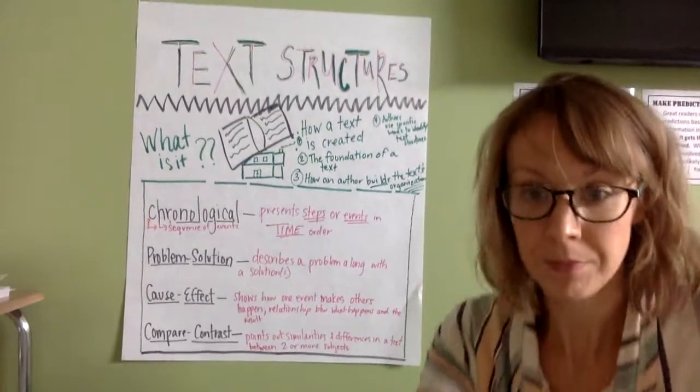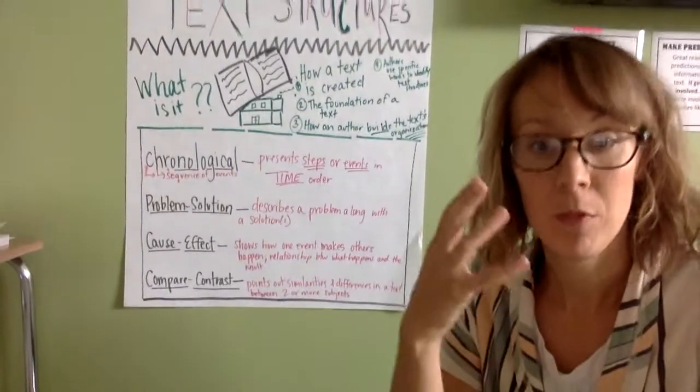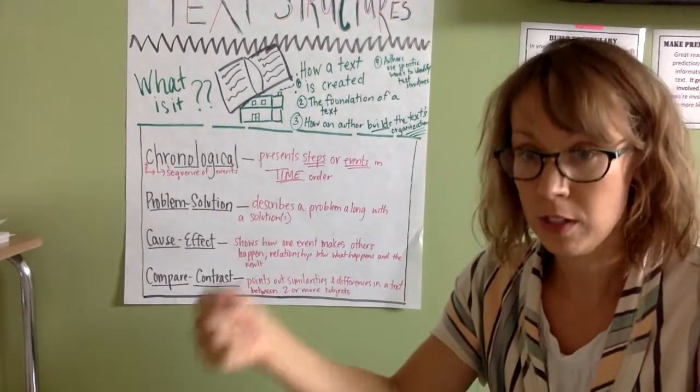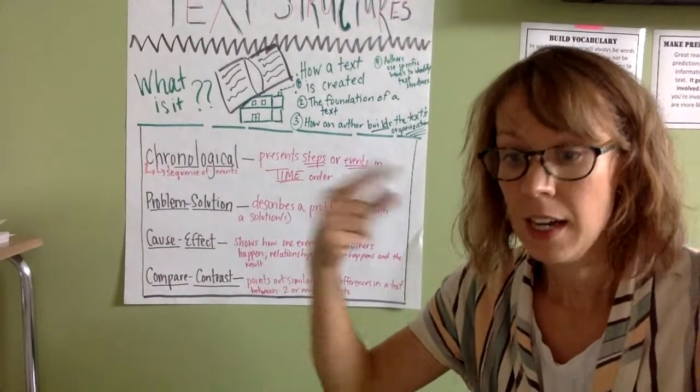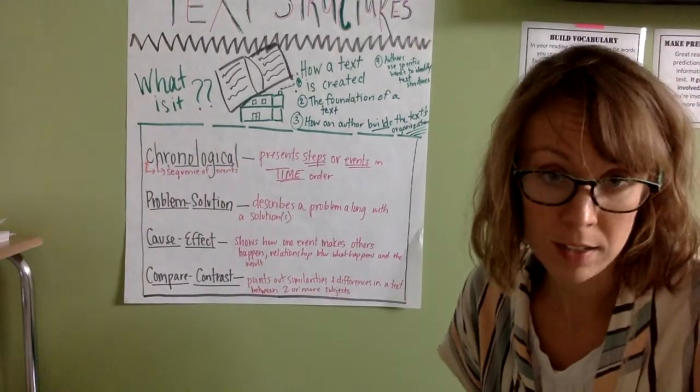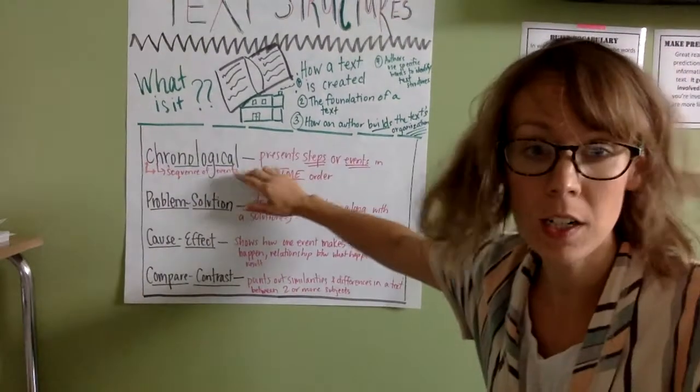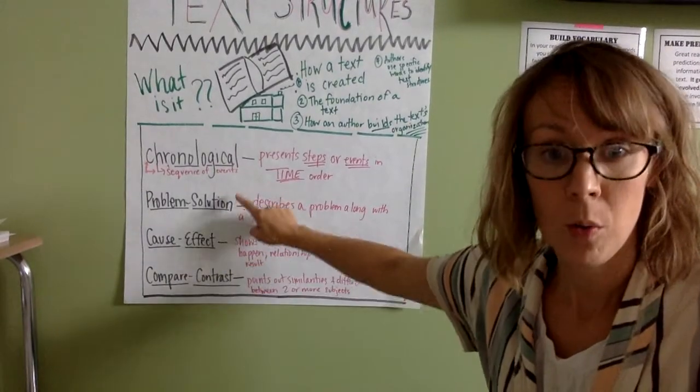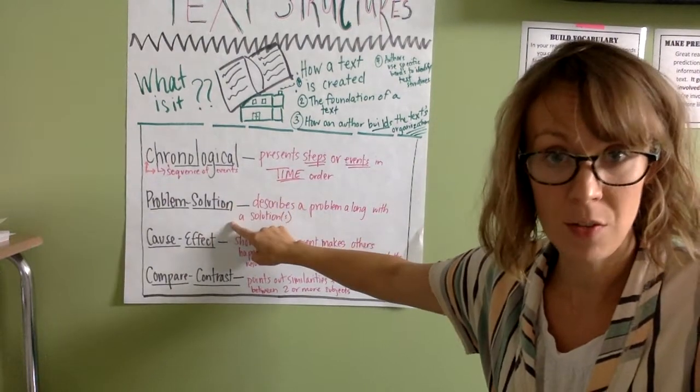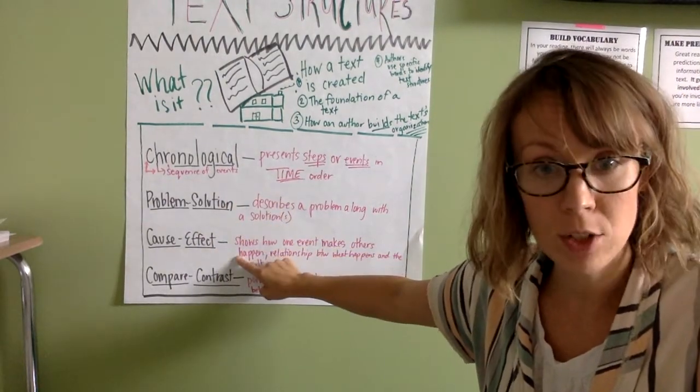So text structure. It's created for a certain way. If you were an author you would write it in a certain way for someone else to read and get the main idea that you want across. So there are four text structures: chronological, problem solution, cause and effect, and compare and contrast.